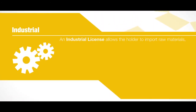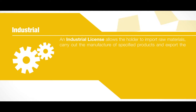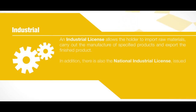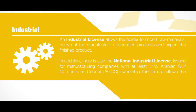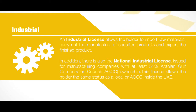Industrial: An industrial license allows the holder to import raw materials, carry out the manufacture of specified products, and export the finished product. In addition, there is also the National Industrial License issued for manufacturing companies with at least 51% Arabian Gulf Cooperation Council (GCC) ownership.